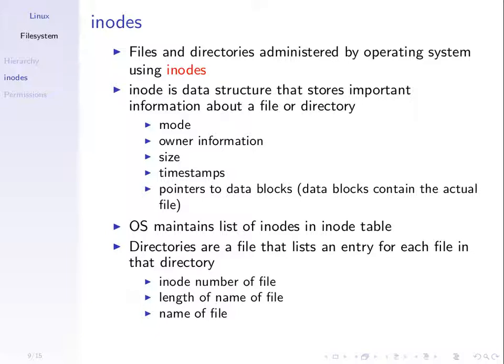Each file has an inode associated with it, which stores information about where the file is on the hard disk, who owns it, how big it is, what time it was created and modified, and also the mode — the access rights. The operating system maintains a list of inodes in what's called the inode table. When a user or software process wants to access a file, the OS goes to the inode table, finds the inode, checks the permissions in the mode, and reads the file from the data blocks.